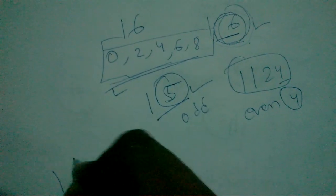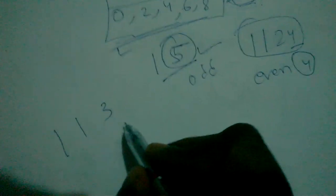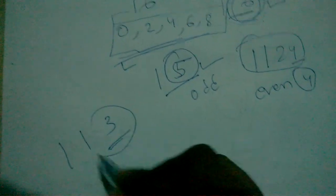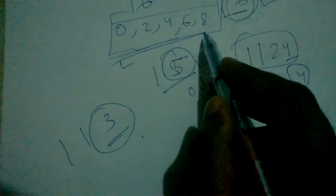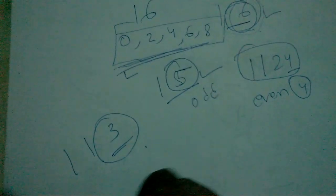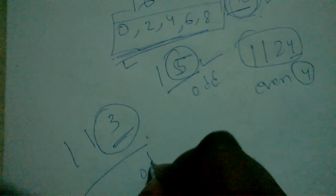I am taking another number: 113. Here, the rightmost digit is 3, and 3 is not divided by 2 and does not belong to these digits. So this whole number is considered an odd number.